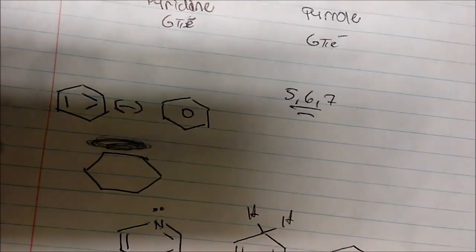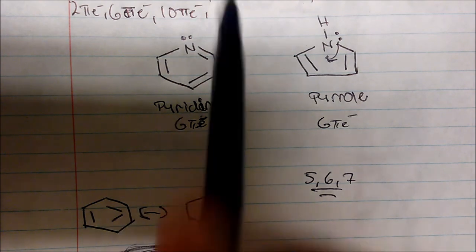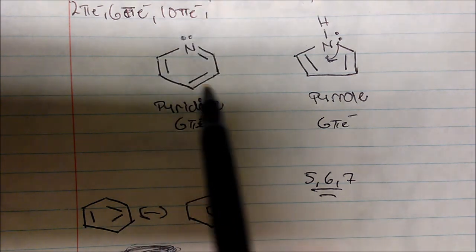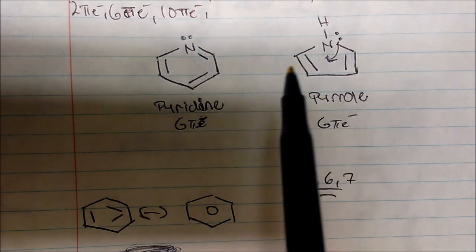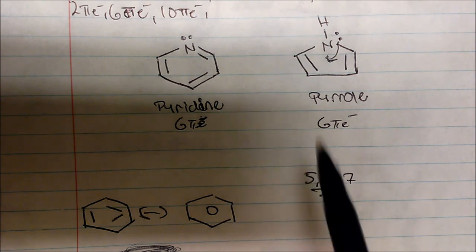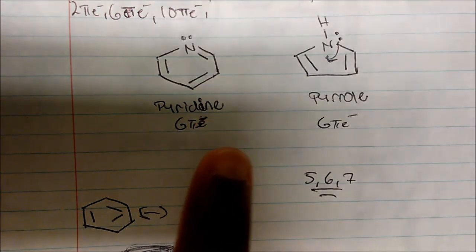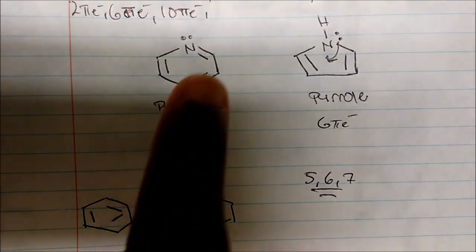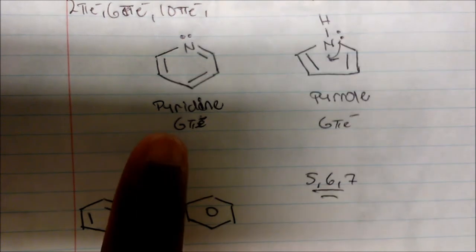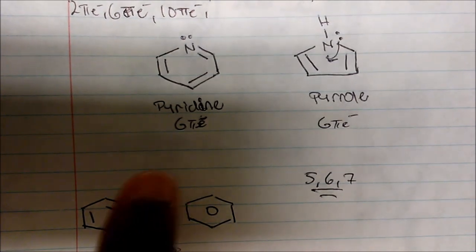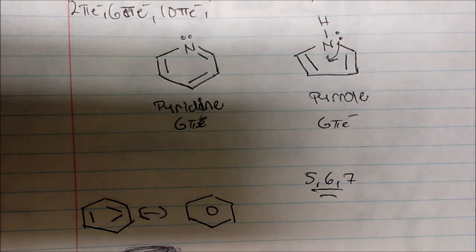The big point to take away from this video: whenever you have stability in a benzene-like aromatic ring with 6 pi electrons, the outer lone pair electrons are usually counted towards hybridization, not as pi electrons. That is a very important point to take away from this video.